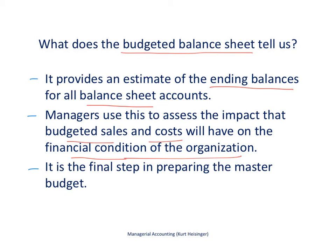This is the final step in preparing the master budget. The master budget is the budget that has all those different components, including the sales budget, and if we're a manufacturing company, the production budget, direct materials budget, direct labor budget, manufacturing overhead budget, and all those other budgets. So this is the culmination of all of those different budgets.